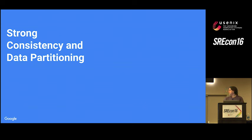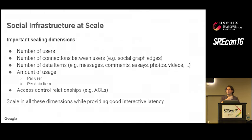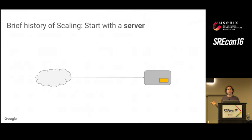Strong consistency and data partitioning is really about how you scale the system. Social systems scale in a number of interesting dimensions: certainly by number of users, but also by number of edges in the social graph, by number of data items that you serve, the amount of usage per user per item, and the access control relationships. We needed to be able to scale all of these things while retaining the latency profile of an interactive server.